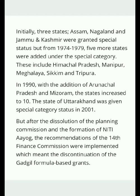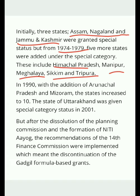Initially in 1969, only three states were granted special status: Assam, Nagaland, and Jammu & Kashmir. From 1974 to 1979, five more states were added once it was recognized that they also needed assistance from the centre for development — Himachal Pradesh, Manipur, Meghalaya, Sikkim, and Tripura — bringing the total to eight states by 1979.